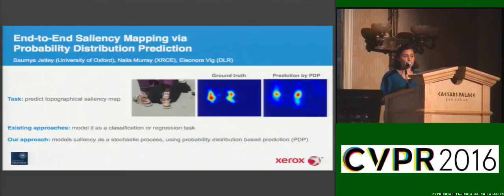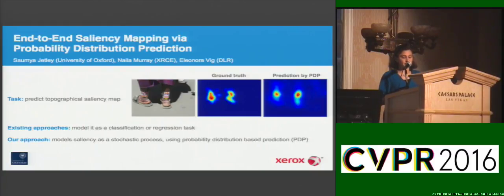Traditionally, these attention maps were generated using psychophysical cues such as centre-surroundedness or contrast. But with the advent of very large-scale saliency datasets such as SALICON, the community has moved towards using deep nets to generate these attention maps.